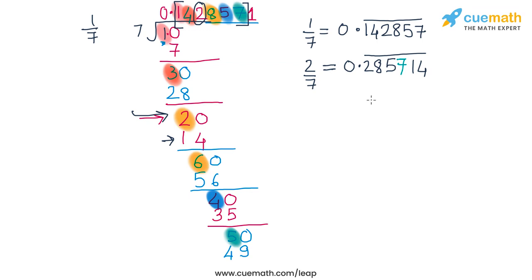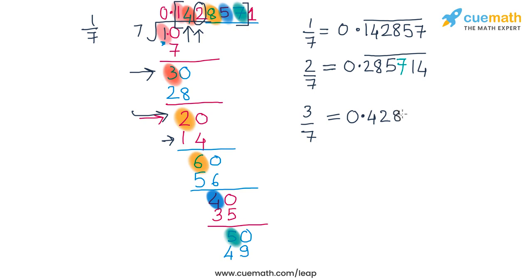Similarly, for 3 by 7, the dividend in the first step is 3, which corresponds to the stage in the long division of 1 by 7 when the remainder was 3. Corresponding to that stage, the multiplier was 4. So the decimal expansion of 3 by 7 starts from 0.4, then follows the same cycle: 4, 2, 8, 5, 7, 1. So 3 by 7 is 0.428571 with a bar on this block of 6 digits.